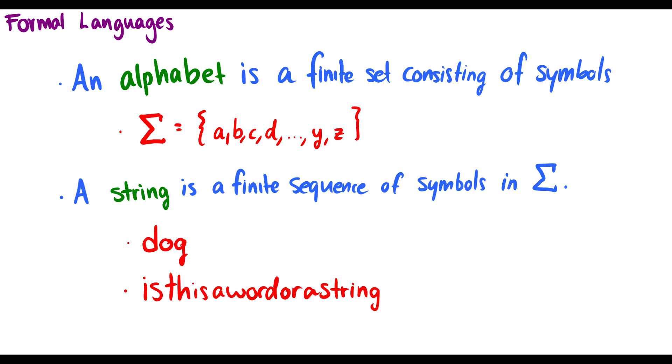So what is a formal language? First we need to talk about its components. We call an alphabet a finite set consisting of symbols. Normally we write the alphabet with a capital sigma. It consists of symbols. For instance, the Roman alphabet A, B, C, D, all the way up to Y and Z. That is going to be the letters we use, and those are symbols of our alphabet.